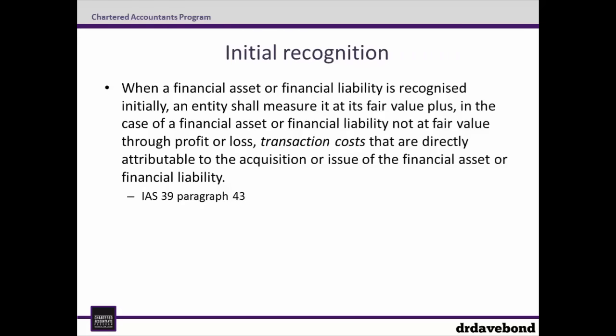The first step is what to do for initial recognition. According to IAS 39, paragraph 43, when a financial asset or financial liability is recognized initially, an entity shall measure it at its fair value plus — in the case of a financial asset or financial liability not at fair value through profit or loss — transaction costs that are directly attributable to the acquisition or issue of the financial asset or financial liability.